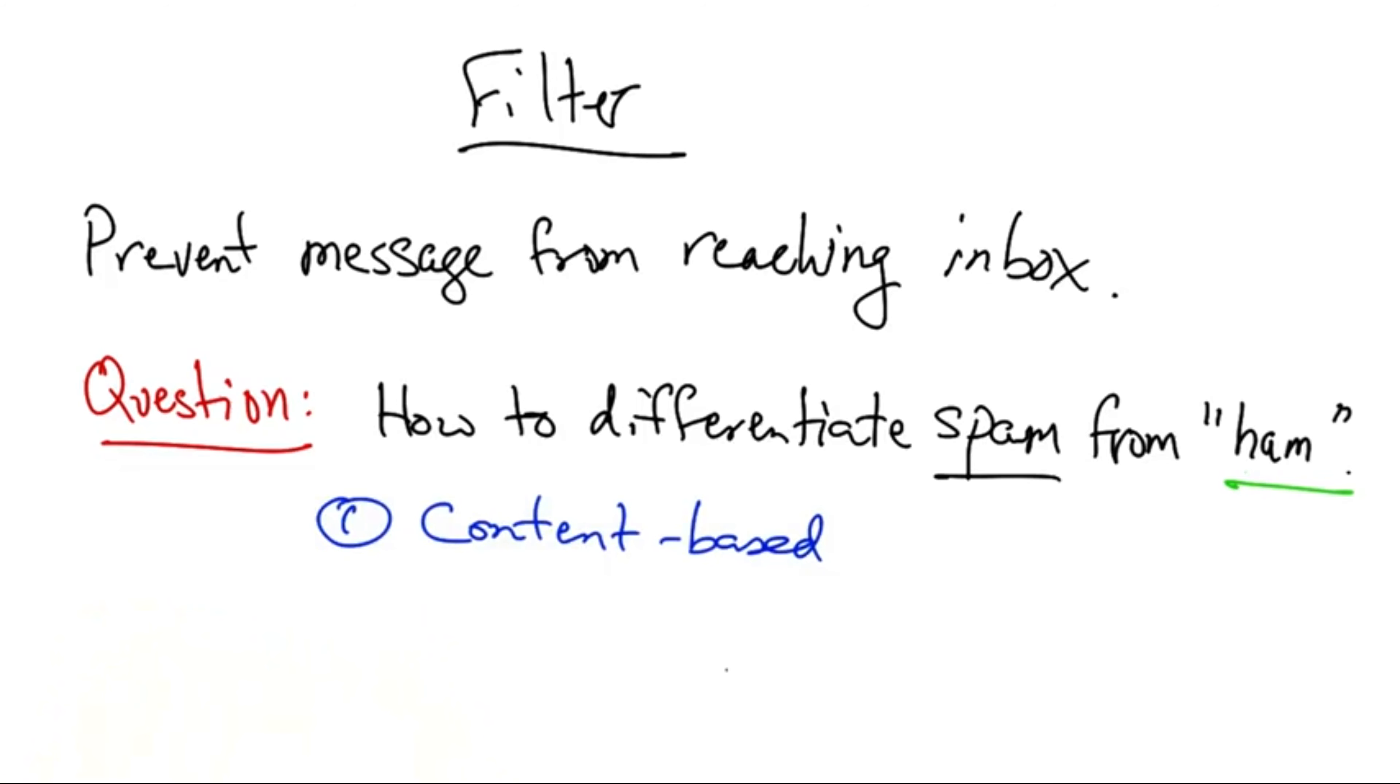One is content-based. In other words, you can look at what's being said in the mail. For example, if the mail contains particular words, such as Viagra or Rolex, a content-based filter might pick up on those terms and decide to filter the mail.